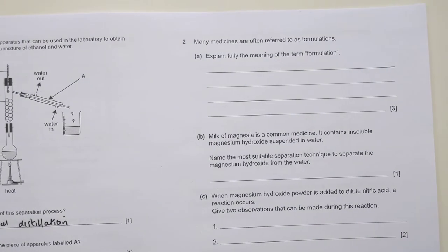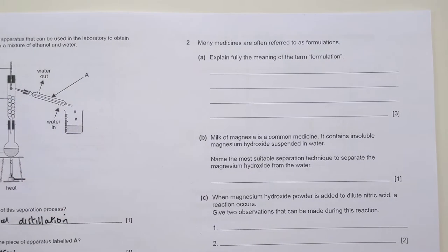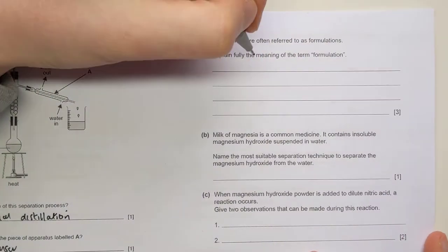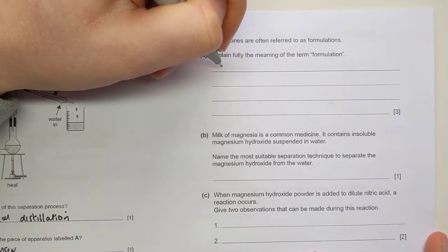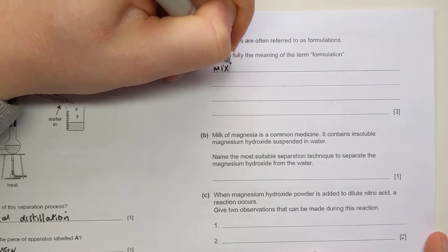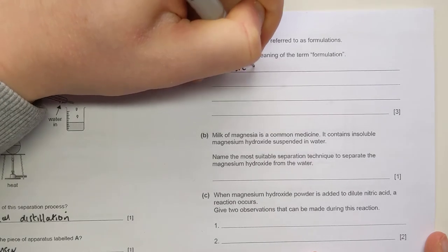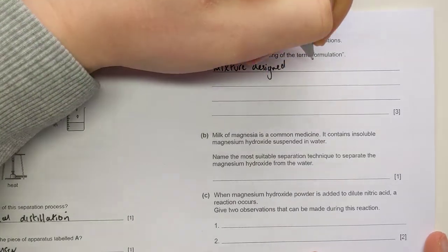On to the second question, obviously this question is about formulations. You've got a three mark definition question about what formulation means, which is quite a lot of detail for a definition. It is in your notes. What we're looking for here is you have to mention that it's a mixture designed as a useful product. That was one mark.